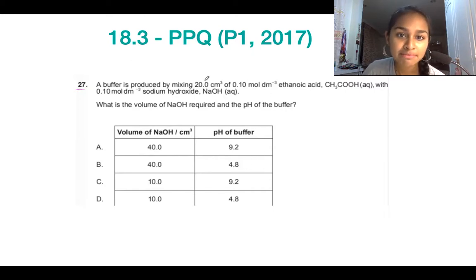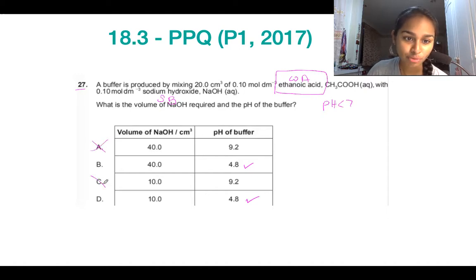A buffer is produced by mixing this amount of 0.1 moles per decimeter cubed of ethanoic acid, a weak acid, with 0.1 moles per decimeter cubed of sodium hydroxide, a strong base. What is the volume of sodium hydroxide required and the pH of the buffer? We are going to be making an acidic buffer here. The reason I know that is because we're always looking for either the weak acid or the weak base. Since we've got a weak acid, we know we're going to make an acidic buffer. So the pH is going to be less than 7. That automatically eliminates two options for you already.